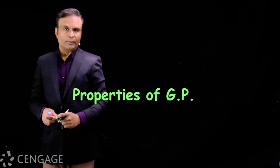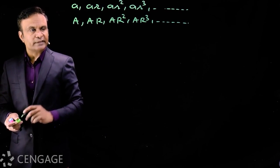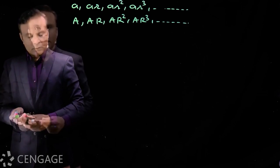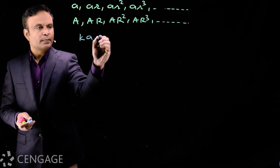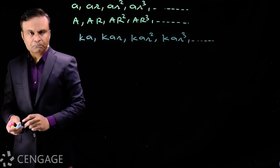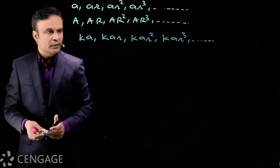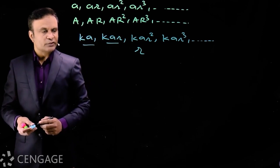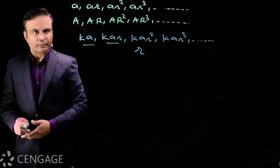Let us see some properties of geometric progression. Consider two GPs. In the first GP, the first term is 'a' and common ratio is small r. In the second GP, the first term is capital A and common ratio is capital R. If we multiply each term of the first GP by a constant k, the resulting series is still a geometric progression with the same common ratio r. Similarly, if we divide each term by constant k, the new terms also form a GP with the same common ratio r.